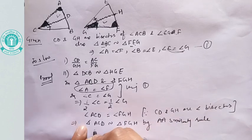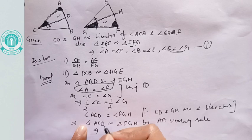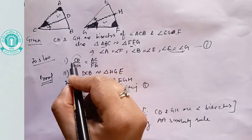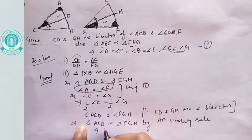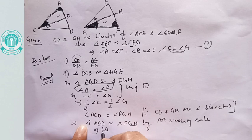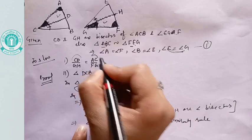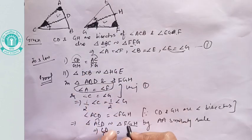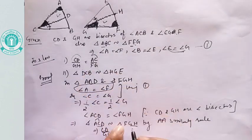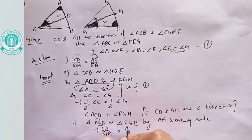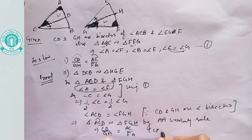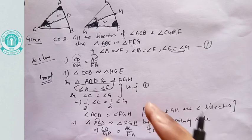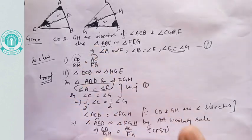Since triangle ACD is similar to triangle FGH, their corresponding sides have the same ratio. Therefore, CD/GH equals AC/FG, which proves the first part. I hope you got the first part.